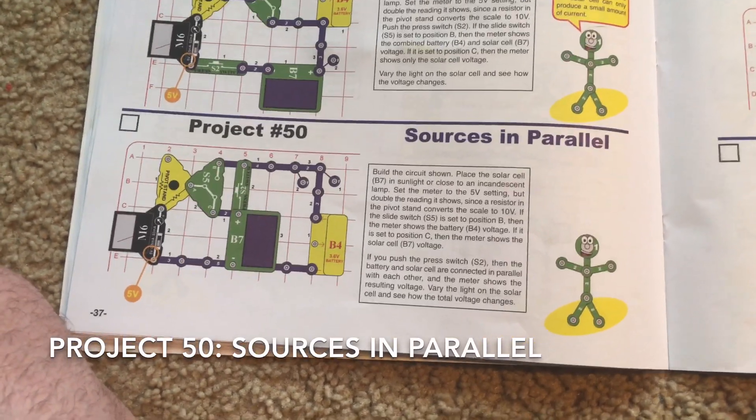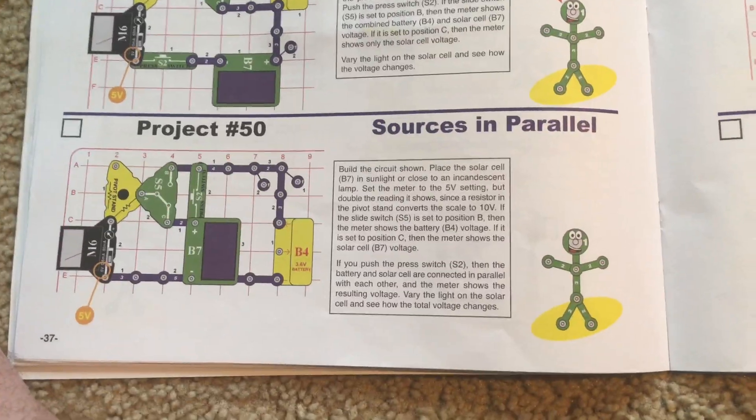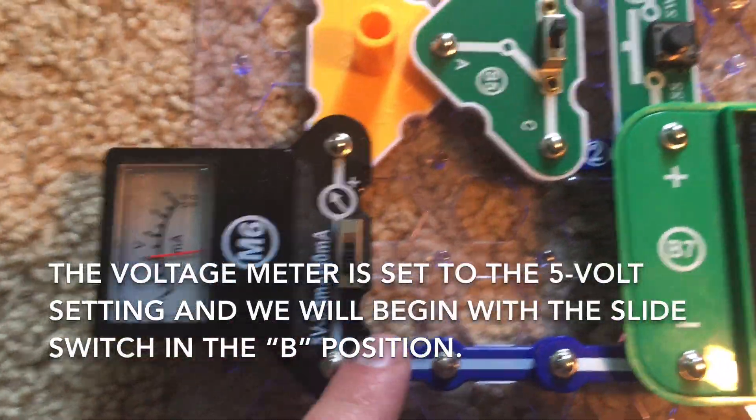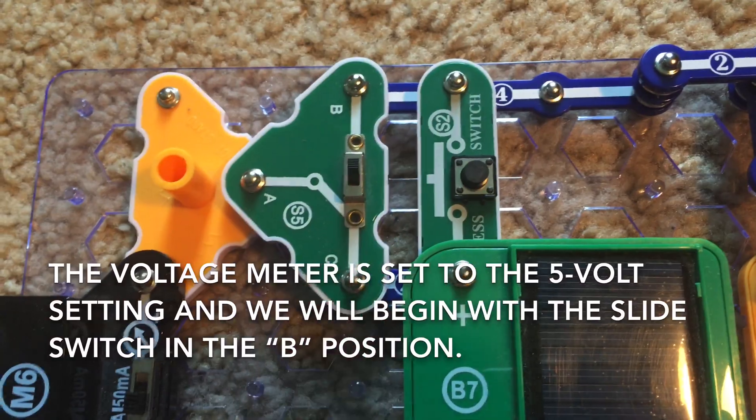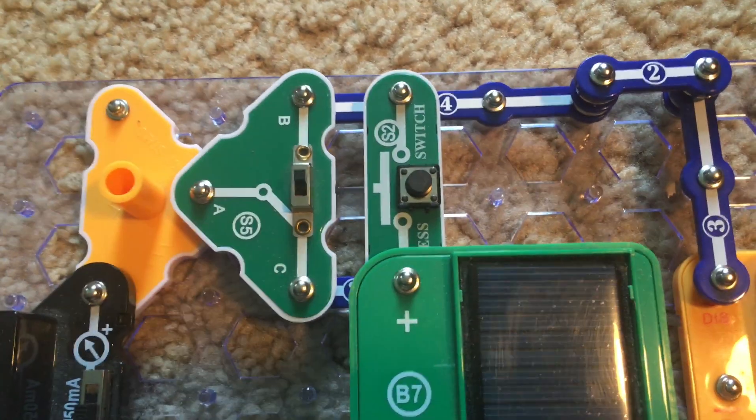For project 50, sources in parallel, the voltage meter will be set to the 5 volt setting and we will start with the slide switch set to position B.